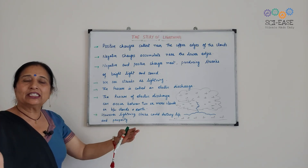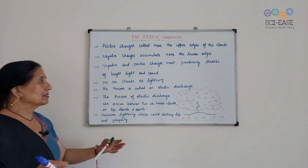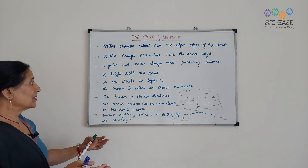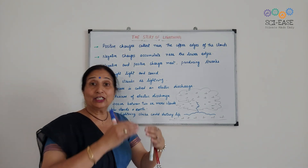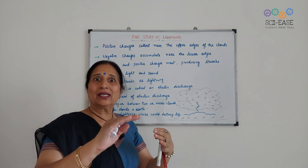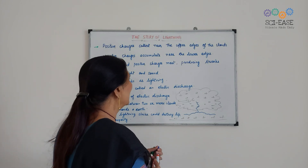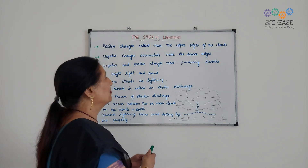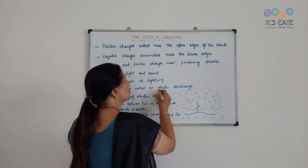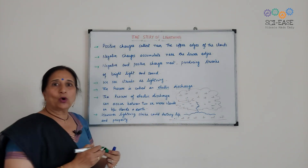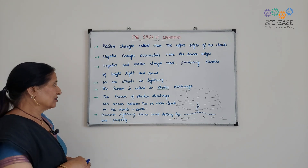Jab bijli chamak ke aaye to hume streaks nazar aate hai. And the process — yeh jo process hota hai during lightning — isko hum bolte hai electric discharge. What we call it: electric discharge.